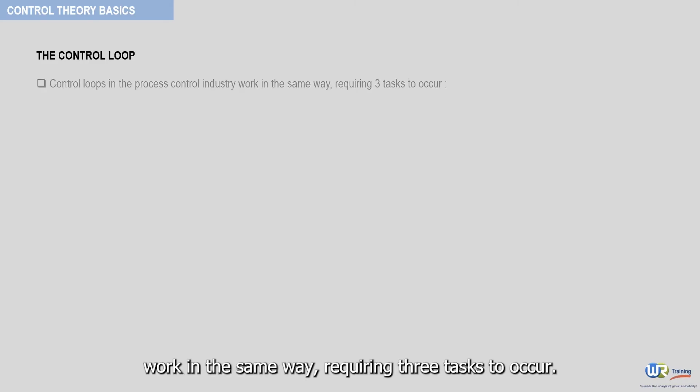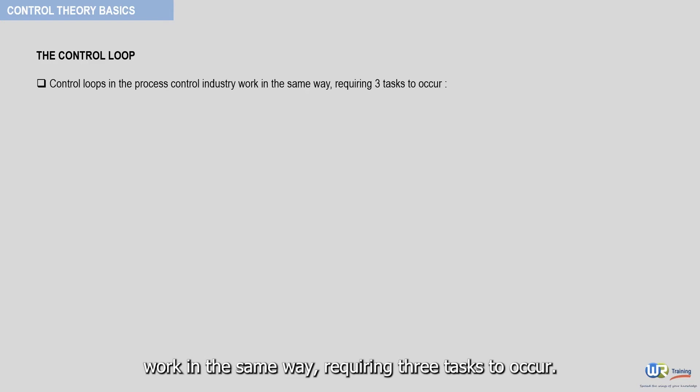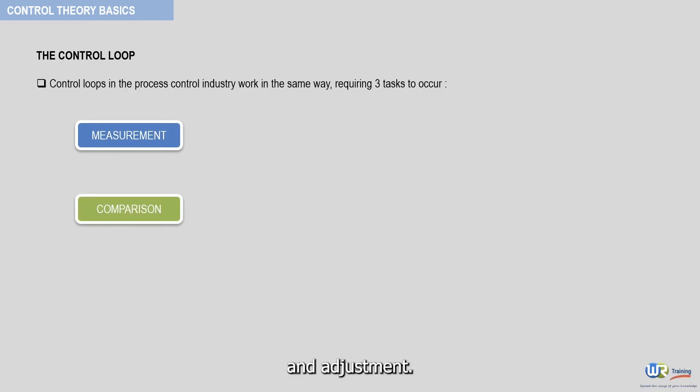Control loops in the process industry work in the same way, requiring three tasks to occur. These tasks are measurement, comparison, and adjustment.